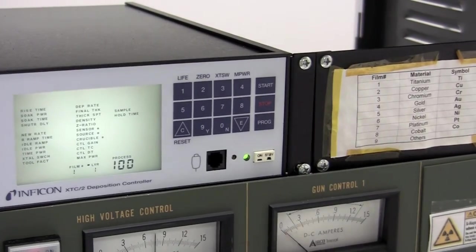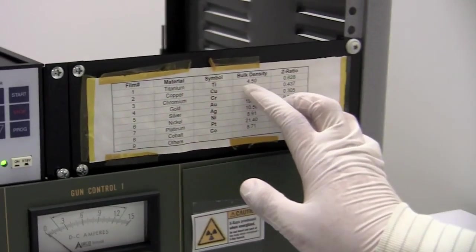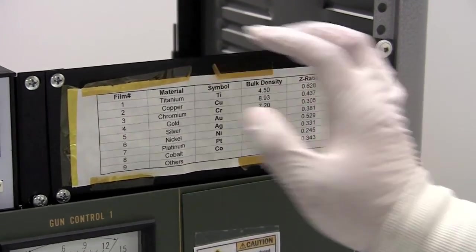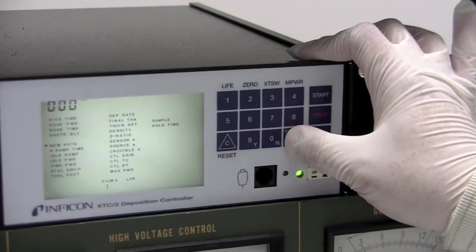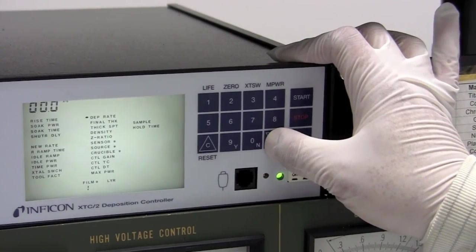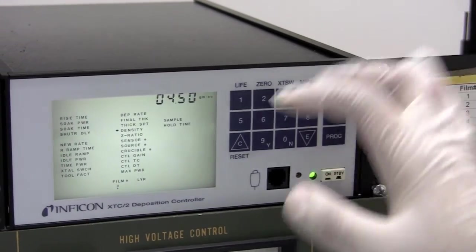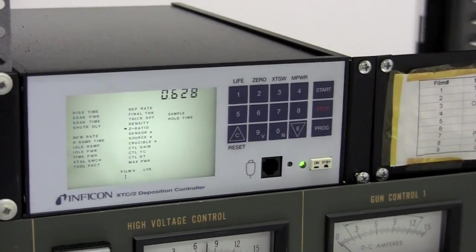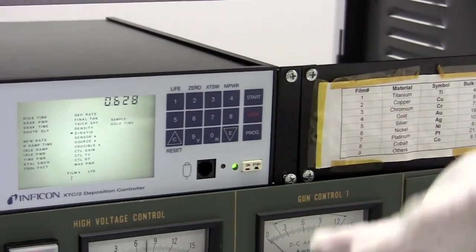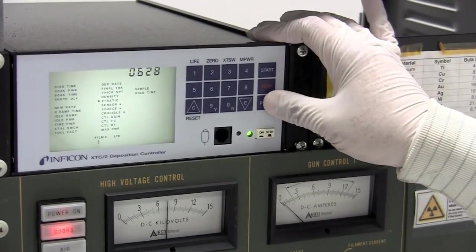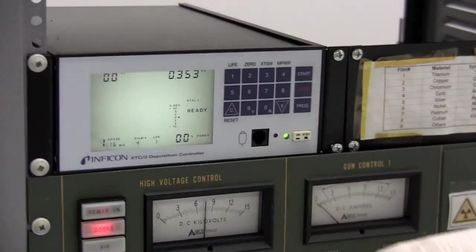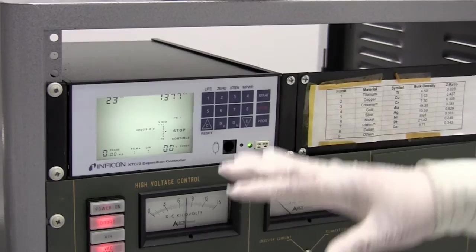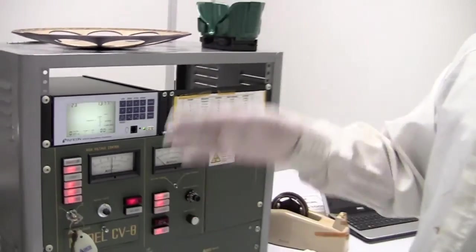And those two numbers would match these. So you want to verify that you had the right number. So you would check the bulk density, which is 4.50, and the Z-ratio, which is 0.628. So density is 4.50, that's correct, and then 0.628. That was correct. So now we know we programmed it right. So you would press program again. Now you're back on the main screen. So you just press start, stop. So now it's ready to measure the material when you deposit.